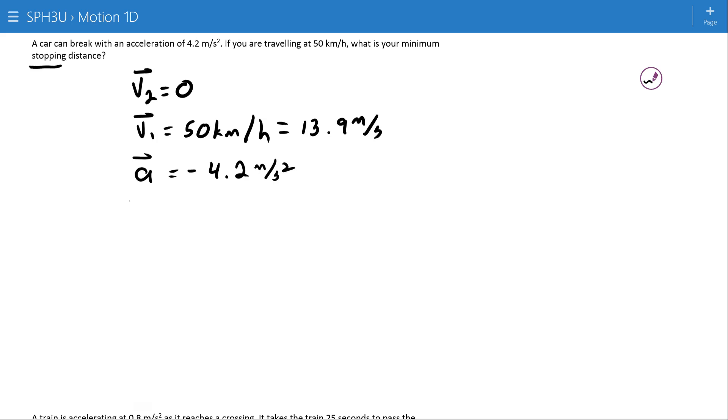So stopping distance, I'm looking for displacement here. And the equation for these guys is 2A delta D equals V2 squared minus V1 squared.